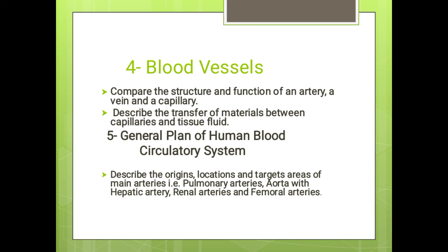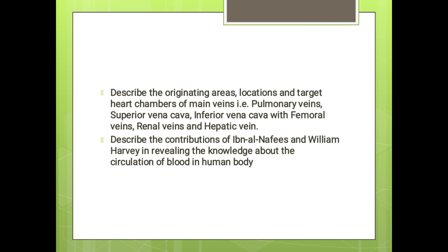Now we have the general plan of the human blood circulatory system. We will cover the original location and target areas of main arteries — pulmonary artery, superior vena cava, inferior vena cava, femoral veins, renal veins, and hepatic vein. Next, describe the originating locations and target heart chambers of main veins: pulmonary veins, superior vena cava, inferior vena cava, femoral veins, renal veins, and hepatic vein.